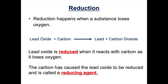The opposite of oxidation is called reduction. Reduction happens when a substance loses oxygen. So if we look at the equation: lead oxide plus carbon goes to lead plus carbon dioxide. In this equation, lead oxide loses oxygen to form lead, so lead oxide is said to be reduced. When lead oxide loses oxygen, the carbon gains the oxygen — the carbon takes the oxygen away from the lead oxide and is oxidised. So in this equation we've got both oxidation and reduction happening.